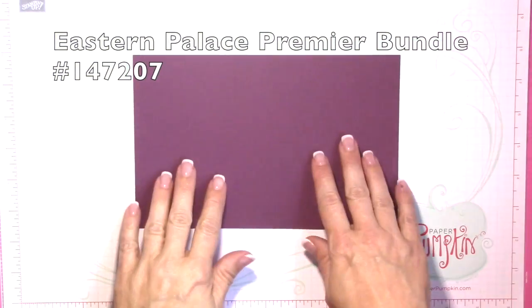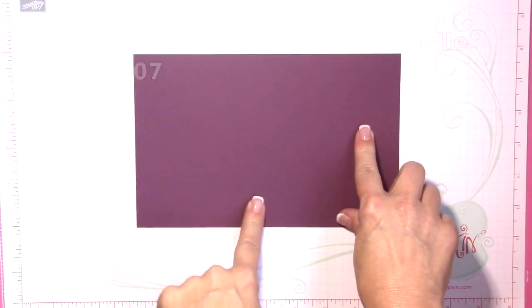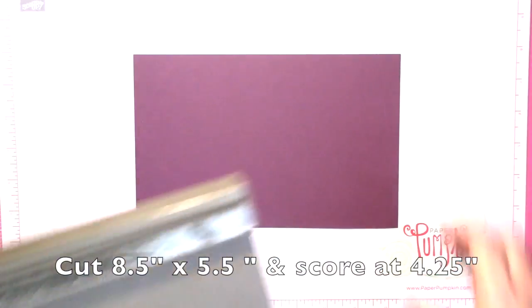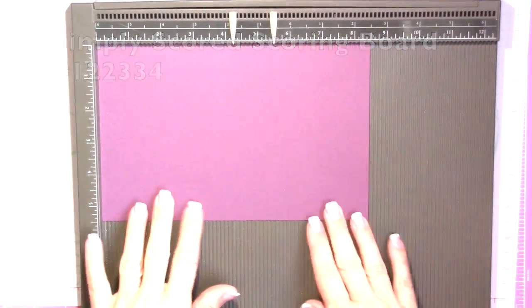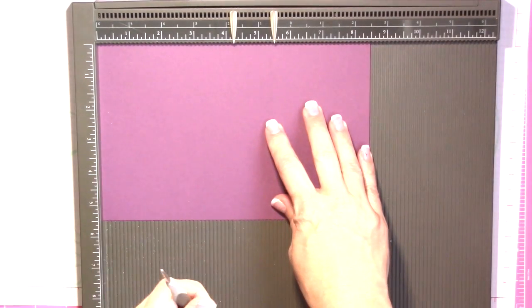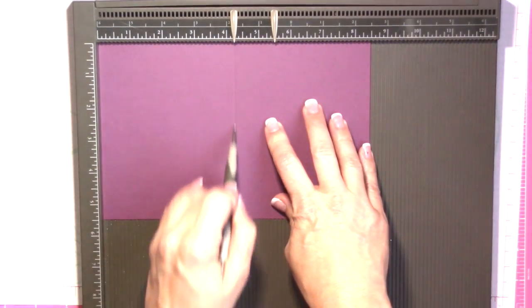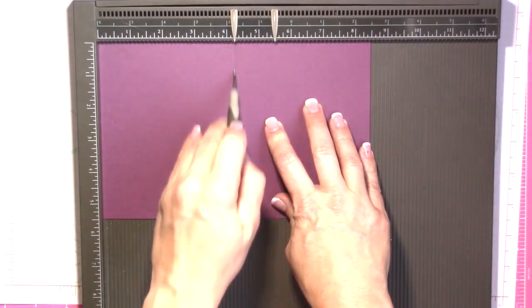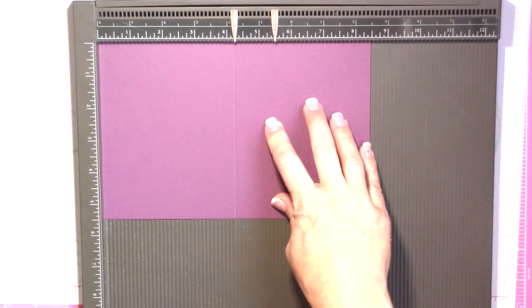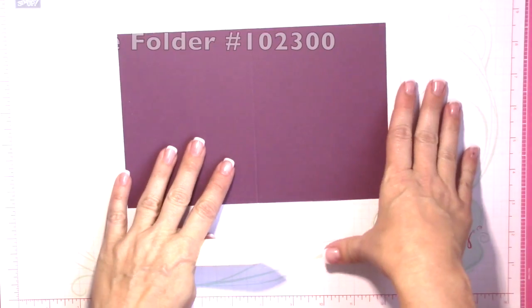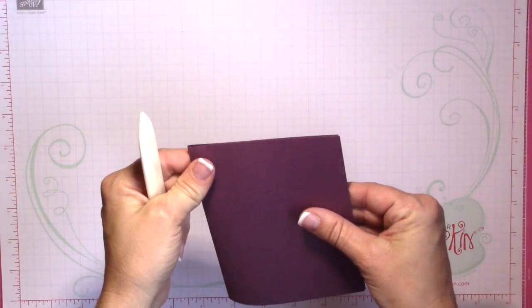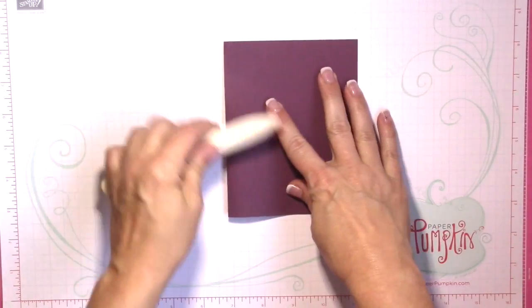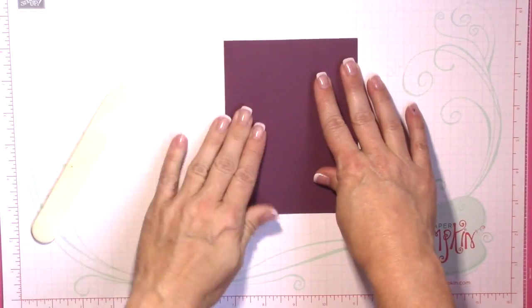So I'm going to be starting off with a piece of Fresh Fig cardstock that measures 8.5 by 5.5 and we're going to score that at 4.25. Now you can get this from the Eastern Palace Premier Bundle. This is one of the new colors for the catalog that you'll be receiving here very shortly. So I'm just going to score that and crease it with my bone folder.